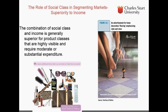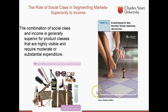The combination of social class and income is generally useful for products that are classless and highly visible, and require moderate or substantial expenditure — such as flooring, house shopping, and luxury products associated with women's cosmetics and lifestyles.